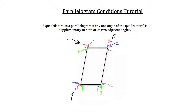The same occurs for the green arrow down here. If the angle indicated by the green arrow is supplementary to green angle 1 or green angle 2, then this quadrilateral is a parallelogram. The same works for the gray arrows and the blue arrows.